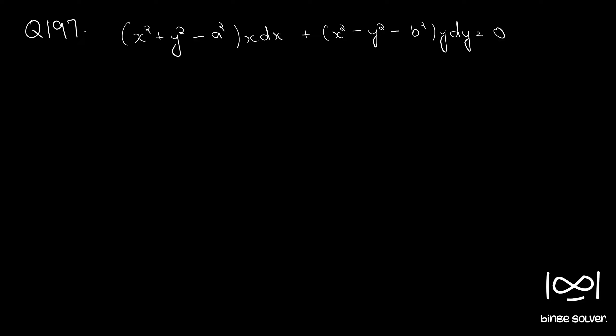Question number 197: (x² + y² − a²)x dx + (x² − y² − b²)y dy = 0.